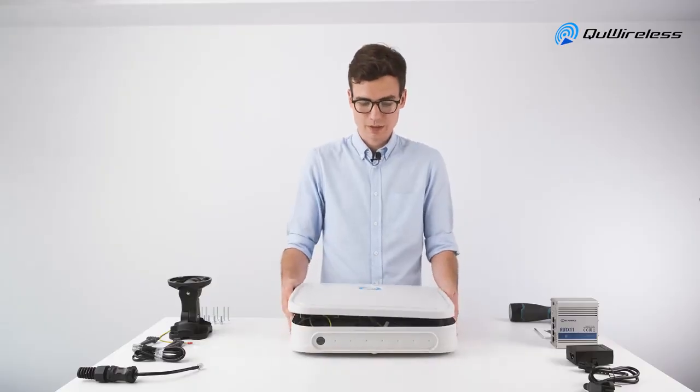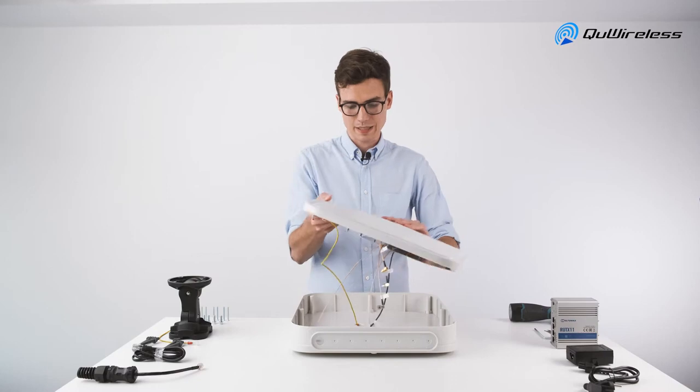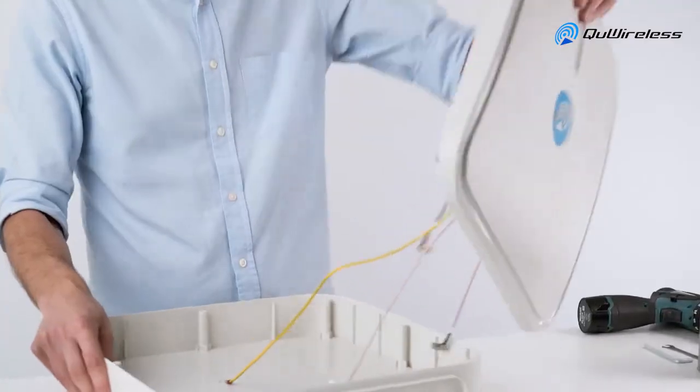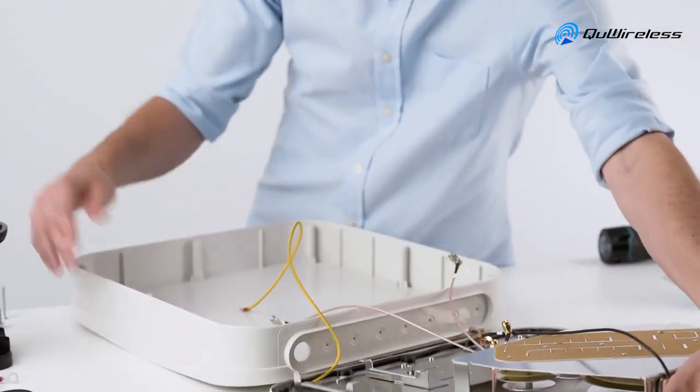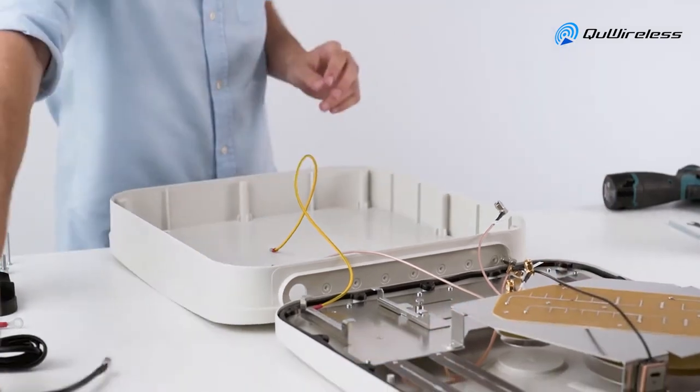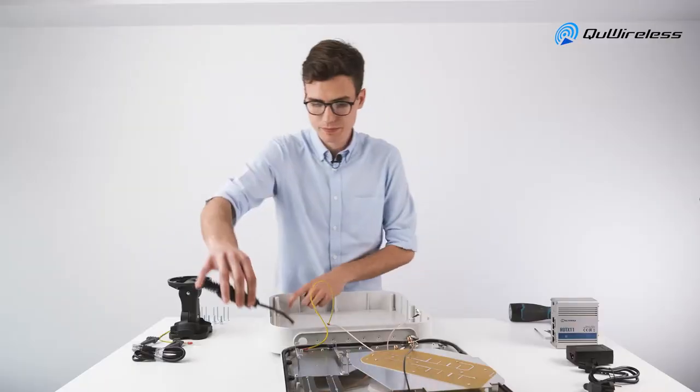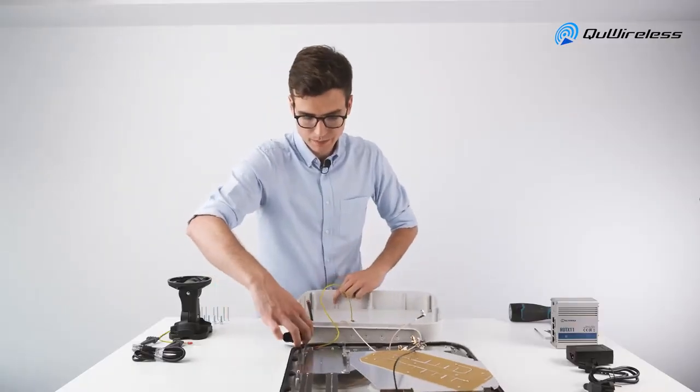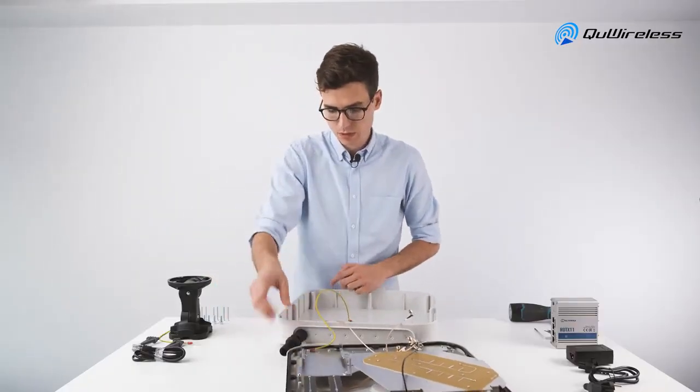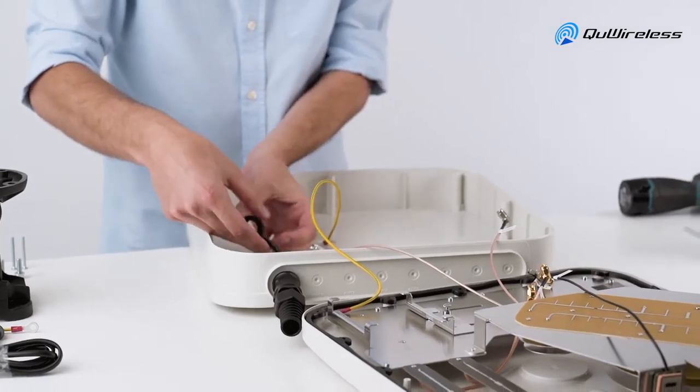First, take the top lid and put it on the side. As a first step we should install the RJ45 adapter. Put it in the hole and screw it.